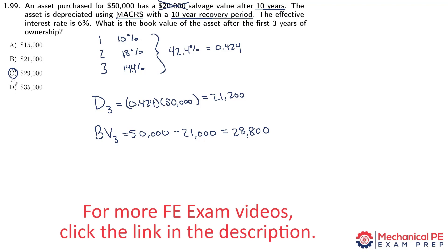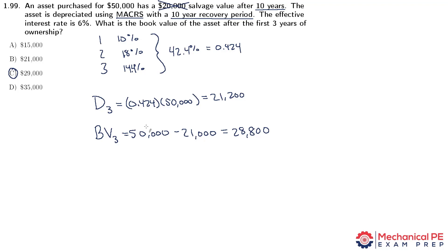In general, if you have depreciation and you're asked to find the book value, it's the same idea. It's going to be the initial purchase price minus the depreciation up to that point. It's just that you may not be using MACRS. You may be using straight line depreciation where it's just some number of years.